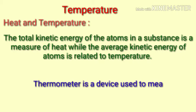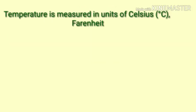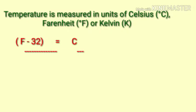Thermometer is a device used to measure temperature. Temperature is measured in units of Celsius (degree C), Fahrenheit (degree F), or Kelvin. The relationship between these units is F minus 32 upon 9 is equal to C upon 5. That shows the relation between F and C. And the second equation is K is equal to C plus 273.15, the relation between Kelvin and Celsius.